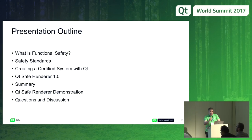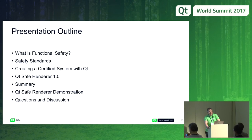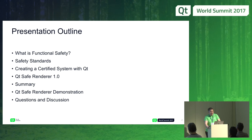I provided a presentation about functional safety a year ago at the previous Qt World Summit, in which we looked quite deeply into some examples, reference architectures, specifications, and standards on how to create functional safety systems. I will very briefly touch the same topics in the beginning, but the main point is to look into the upcoming Qt Safe Renderer and how it can be used in creating functional safety systems with Qt.